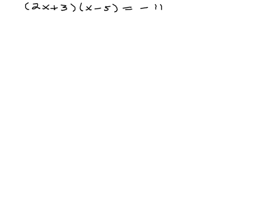We'd like to look at this example: the quantity 2x plus 3 times the quantity x minus 5 equals negative 11.